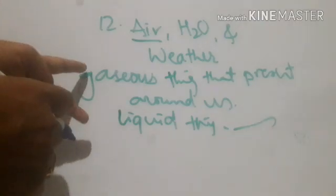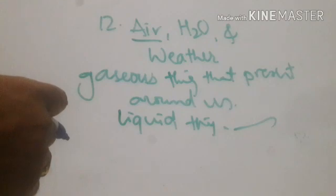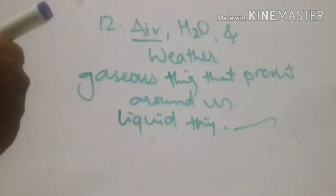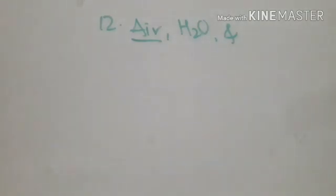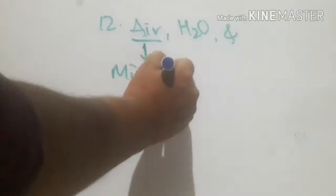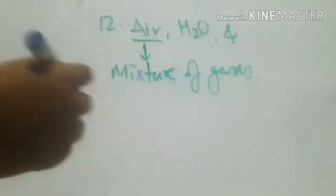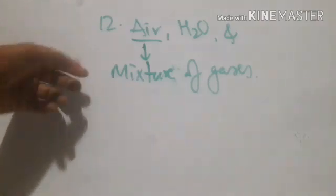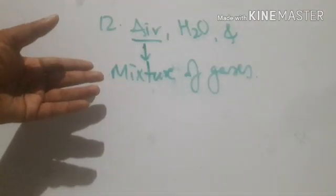This gaseous thing and liquid thing both together form the weather. Now, if anybody asks you what is air, you should answer that air is the mixture of gases. Air is always a mixture of gases — different gases mix together and finally form the product called air.